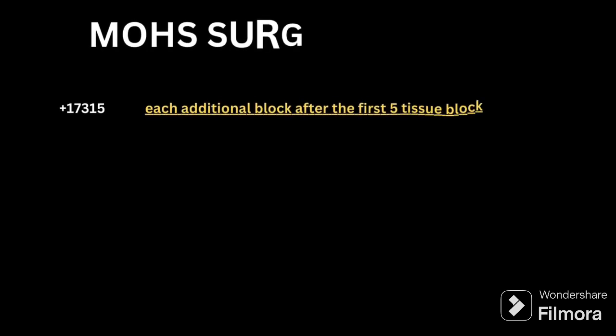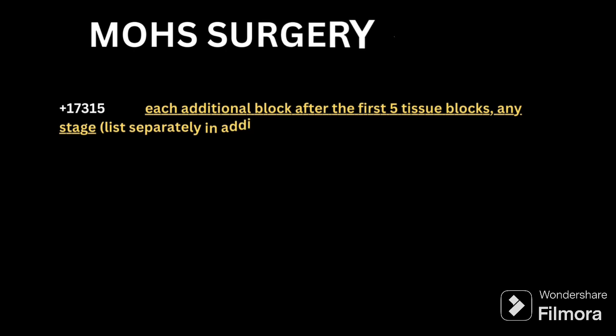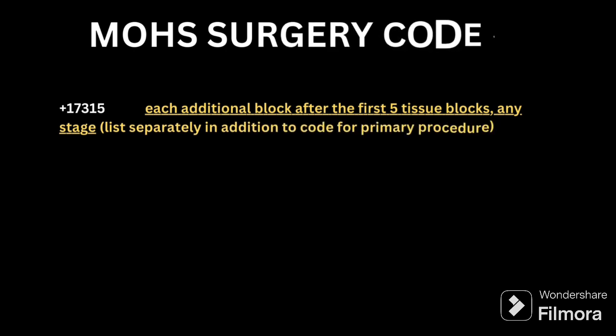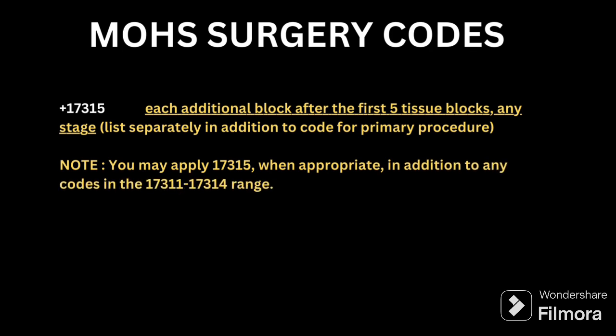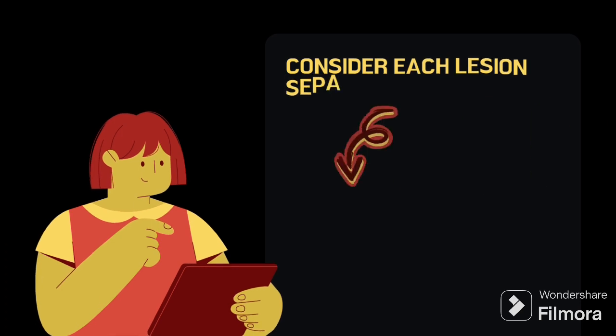Next is add-on code 17315. For any remaining additional blocks beyond the five included in each stage, we use 17315 to code those additional blocks alone. I have added an example so that it will be easy to understand the coding pattern. Now we will look at those examples.